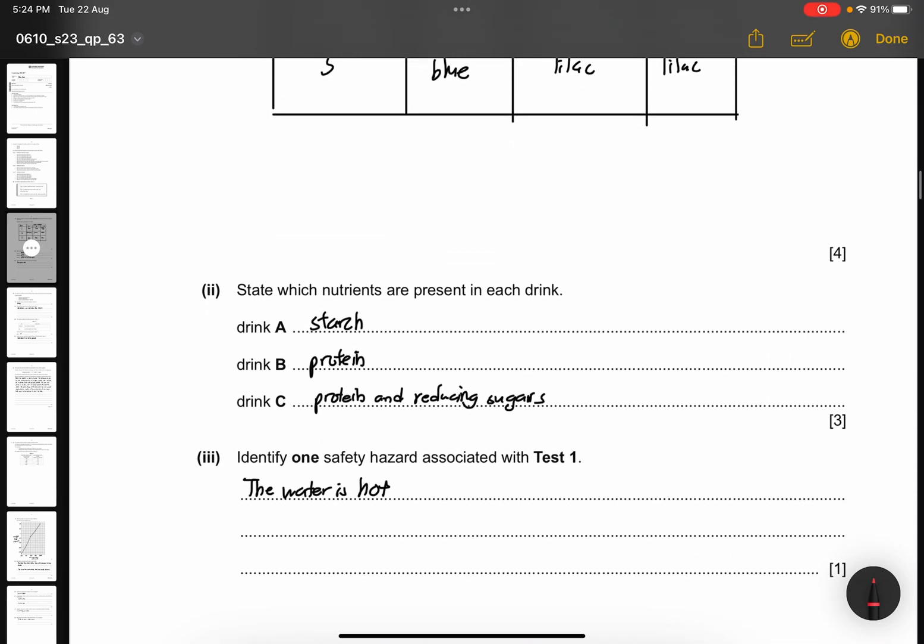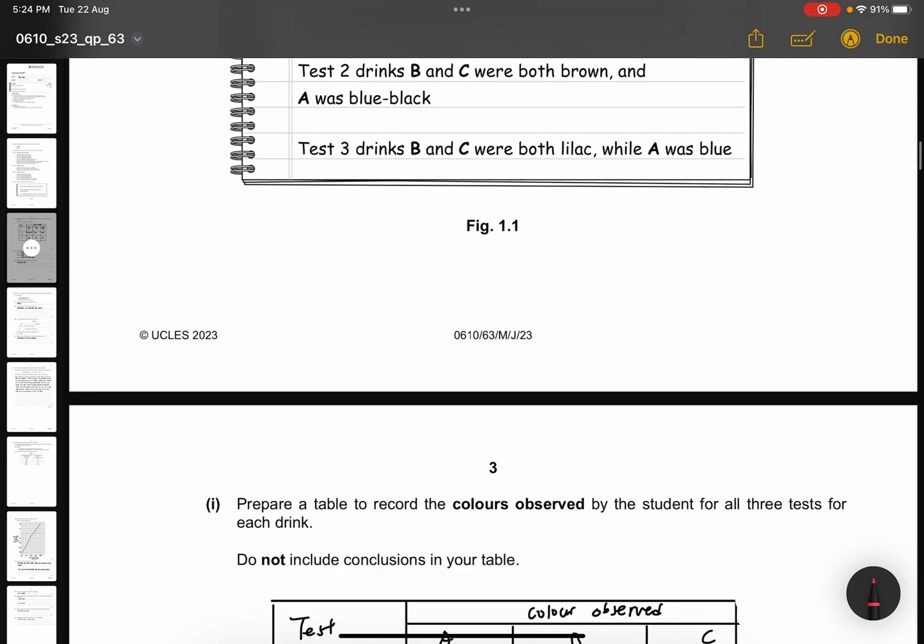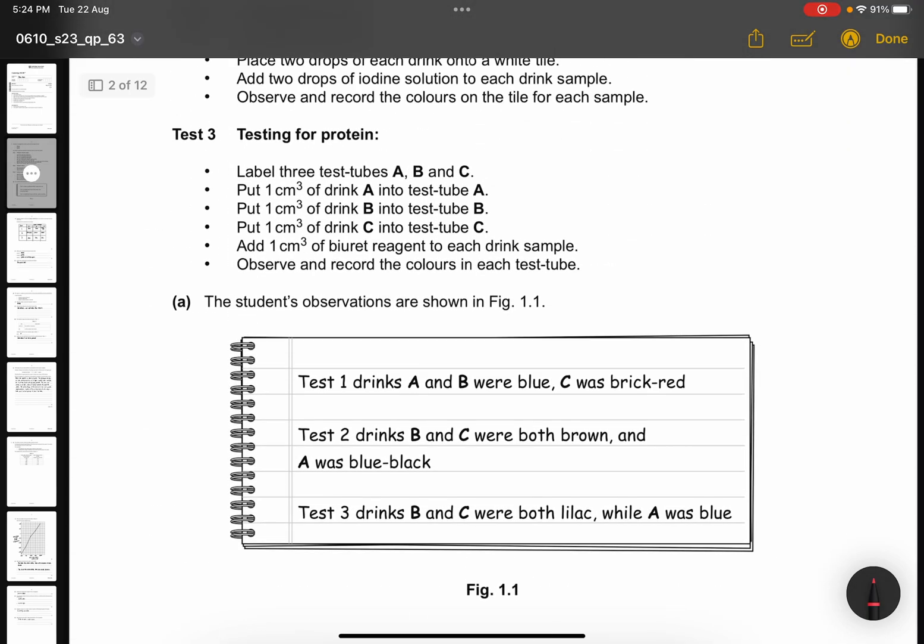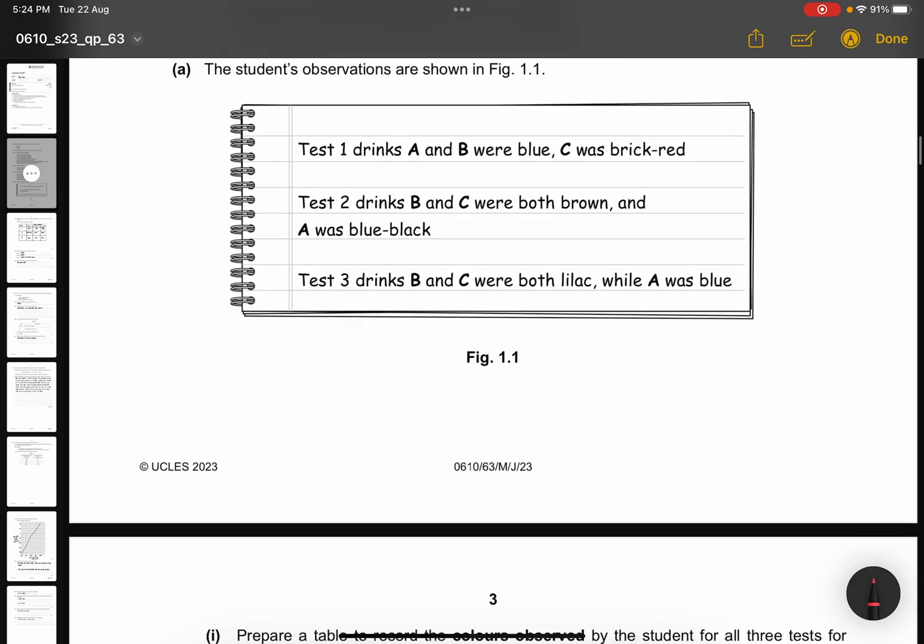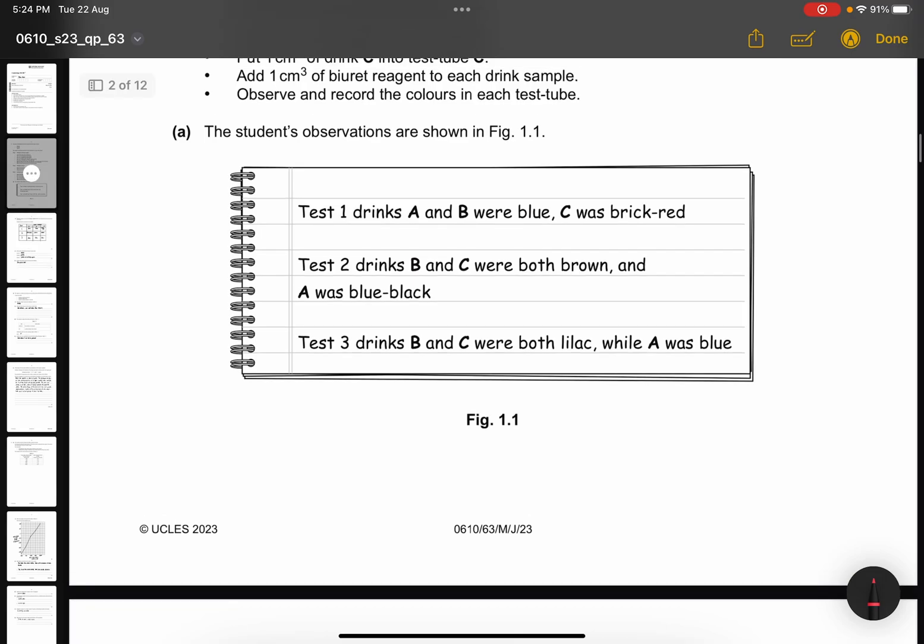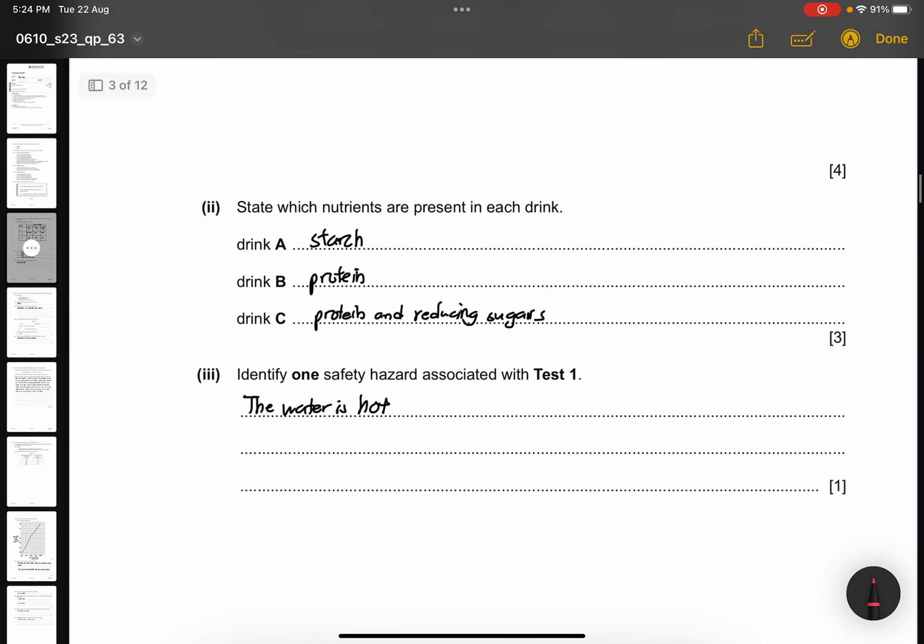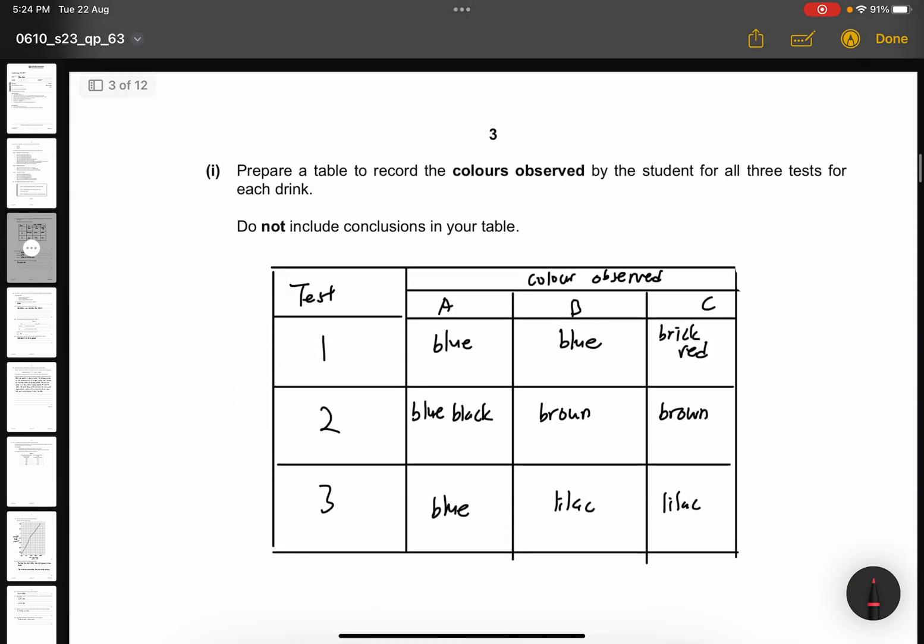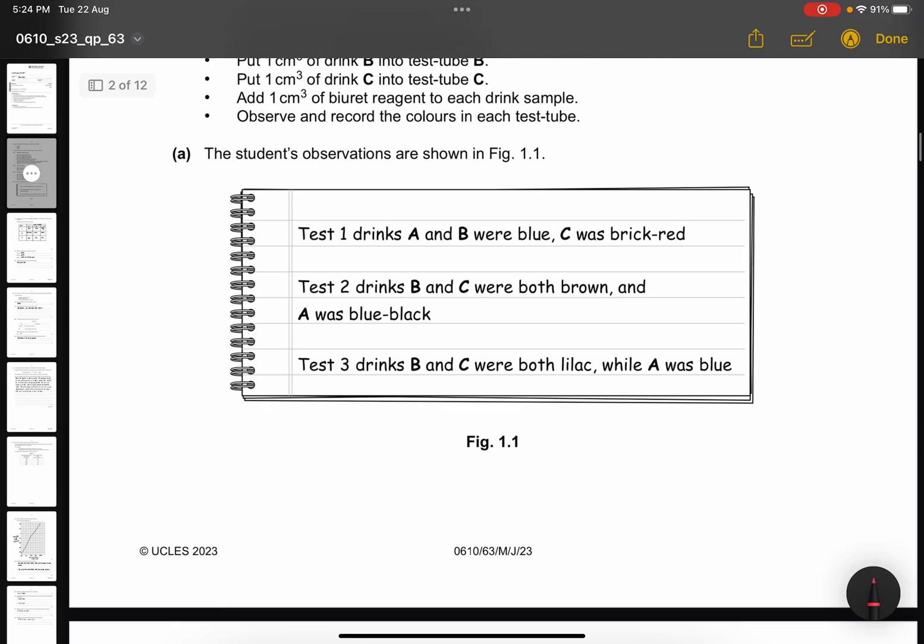Part 2, state which nutrients are present in each drink. So when you see drink A, C was brick red, so it means that there is reducing sugar or you can say starch. For drink B, we can see they were both brown and A was blue-black. So blue-black we know will be starch, and drink C is protein and reducing sugar because lilac and blue is present.